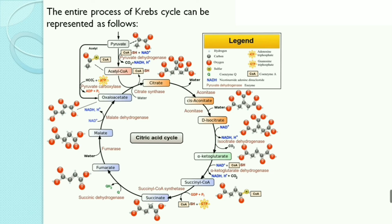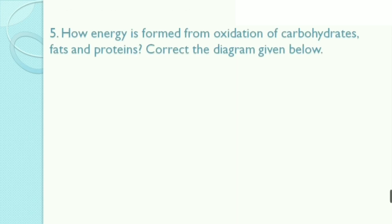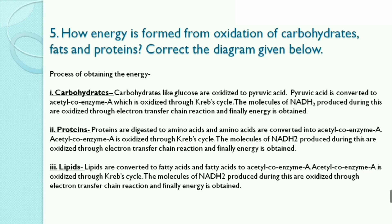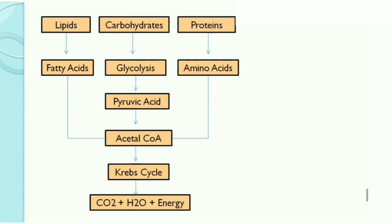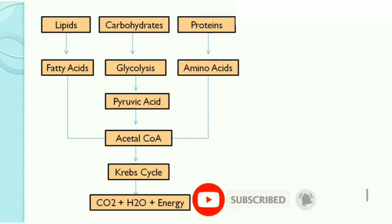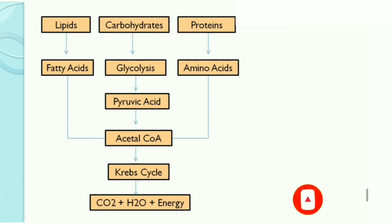The next question — how is energy formed from oxidation of carbohydrates, fats, and proteins — refers to the diagram given in the book. This was the second chapter that we have completed. The next lesson, Life Processes in Living Organisms Part 2, will be coming soon. Please subscribe, share, and like all my videos. Thank you very much.